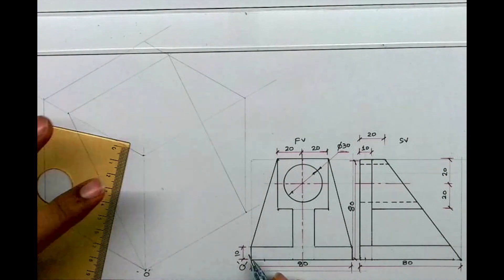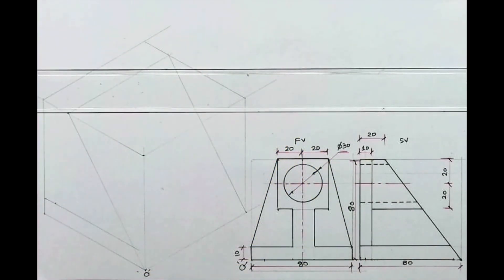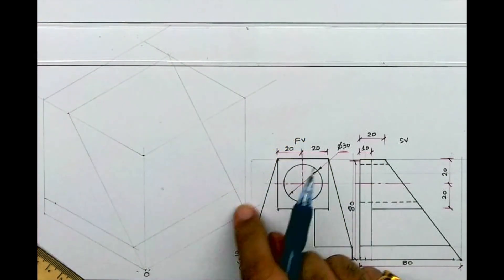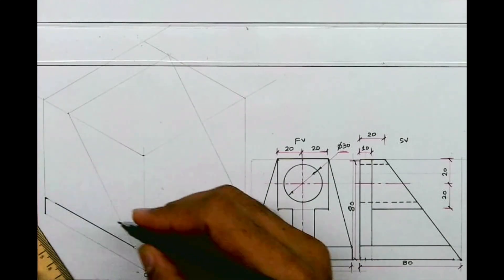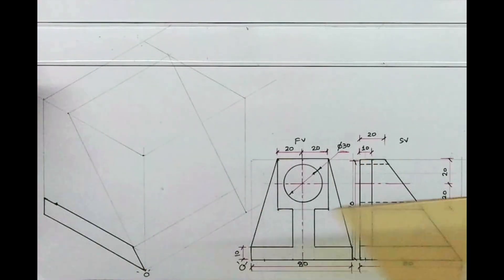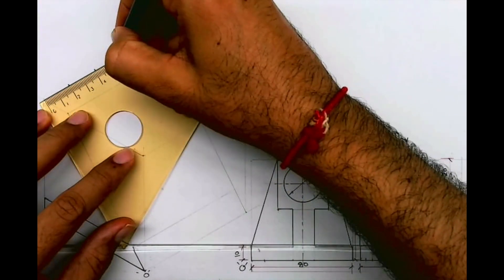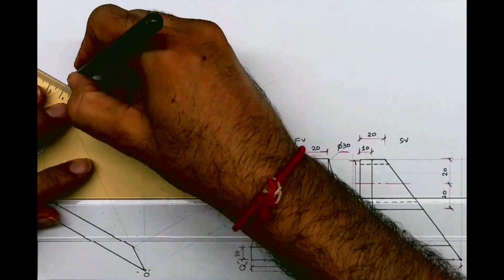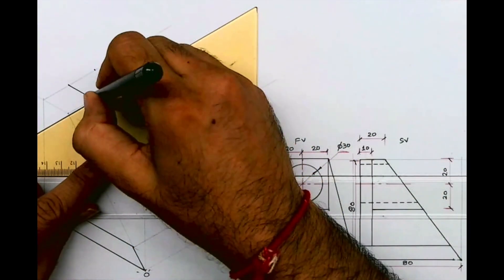Now if you see, this entire part is in the middle, and this height is 10, so first I will take height 10. I will extend, and from here also I will extend this line. After that, you can see this much is dark so that we can draw. After that, this 40 — you take half of 80, which is 40, and then you take 20 on both sides, then you extend and draw a line like this.